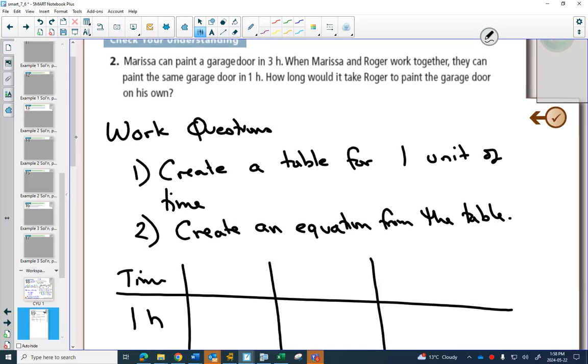Marissa can paint a garage door in three hours. Marissa's fraction. How much does she get done in one hour? If she can do the whole thing in three hours, then does it make sense that she could get one third done in one hour?